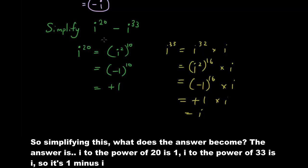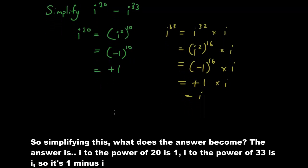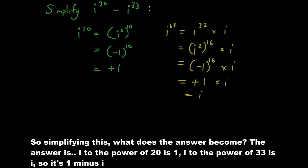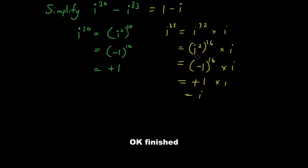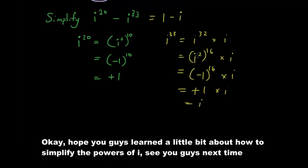So putting it all together: i to the power of 20 is 1, and i to the power of 33 is i, so the answer is 1 minus i. I hope you guys learned a little bit about how to simplify powers of i. See you guys next time.